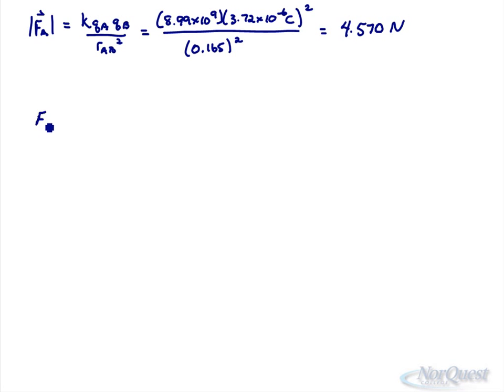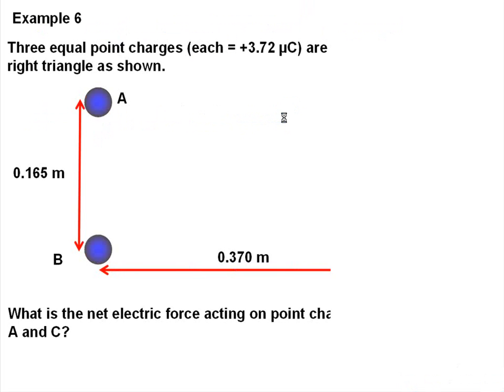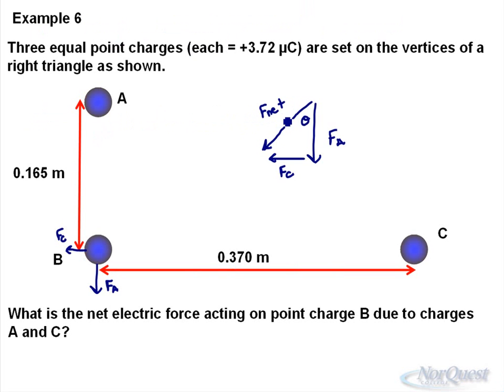Let's calculate the force from C. It's going to equal to, again, K, QC, QB over RCB squared. So it's 8.99 times 10 to the 9. Charges were the same size. 3.72 times 10 to the negative 6 squared. The distance is different. And this is 0.370.